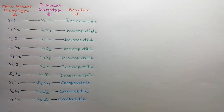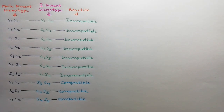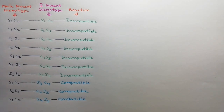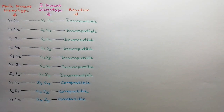In the SSI system, with the male parent genotype always S1S2, crosses are as follows: S1S2 × S1S2 — incompatible; S1S2 × S1S4 — incompatible; S1S2 × S1S5 — incompatible; S1S2 × S2S3 — incompatible; S1S2 × S2S4 — incompatible; S1S2 × S3S4 — incompatible. However, S1S2 × S3S5 is compatible, and S1S2 × S4S5 is also compatible. Incompatibility occurs whenever S1 or S2 appears in the female genotype.